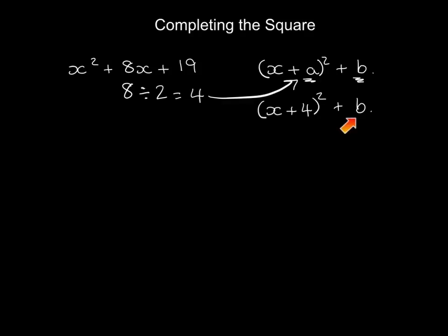Now this bit here, this b, you have to work out how far you need to go from 4 squared and you get 4 squared by doing 4 squared. You want to link that to that number 19. So if you work out 4 squared, 4 squared is 16.